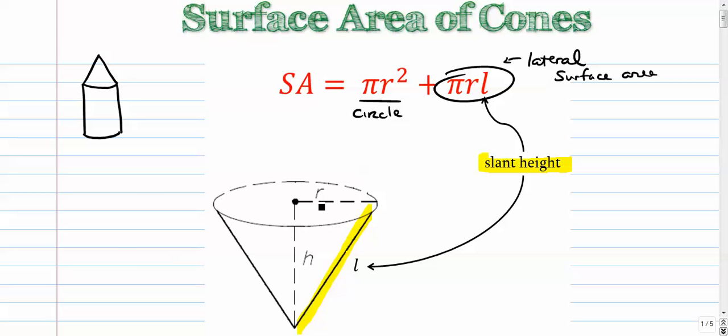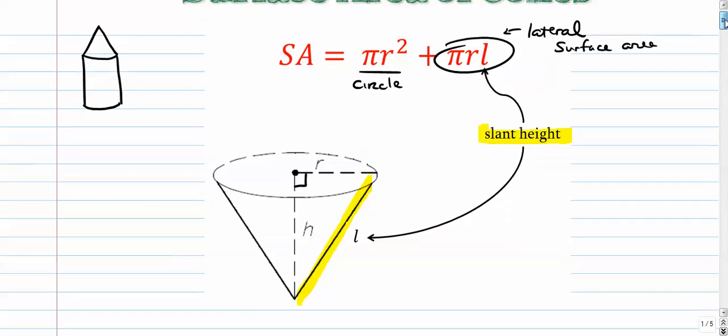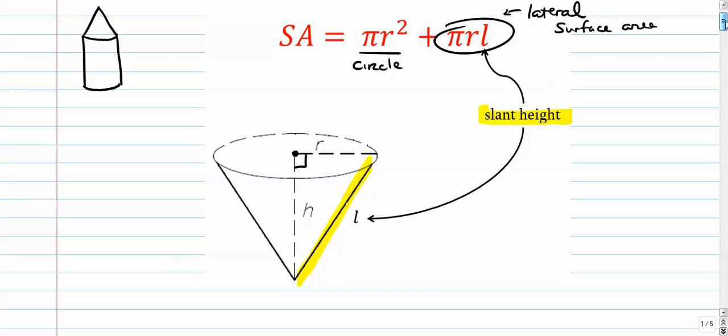That's the slant height, and you can probably see that sometimes we're going to have to use Pythagorean theorem here. We've got ourselves a right triangle, so depending on what we're given we might have to use a squared plus b squared equals c squared.